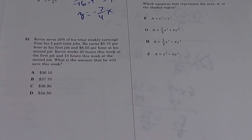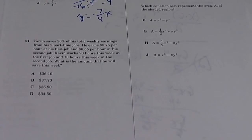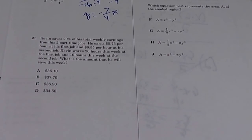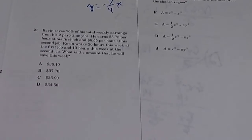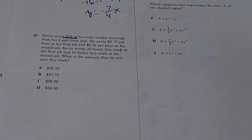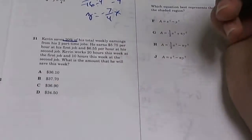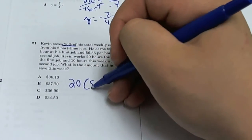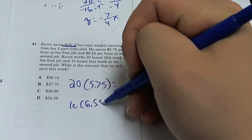Kevin saves 20% of his total weekly earnings from his two part-time jobs. He earns $5.75 per hour at his first job and $6.55 per hour at his second job. Kevin works 20 hours this week at the first job and 10 hours this week at the second job. What is the amount he will save this week? So we know he saves 20% of his total weekly earnings. First we need to know how much does he earn from his first job and how much he earns from the second job.